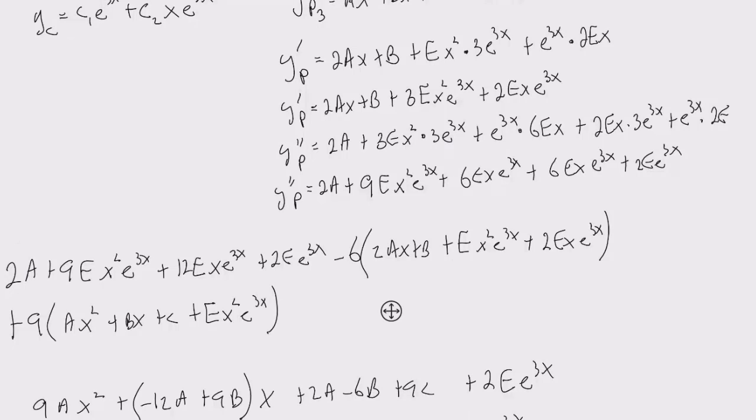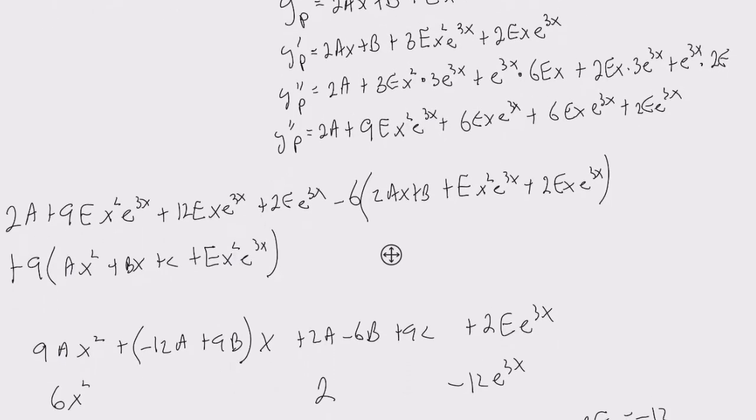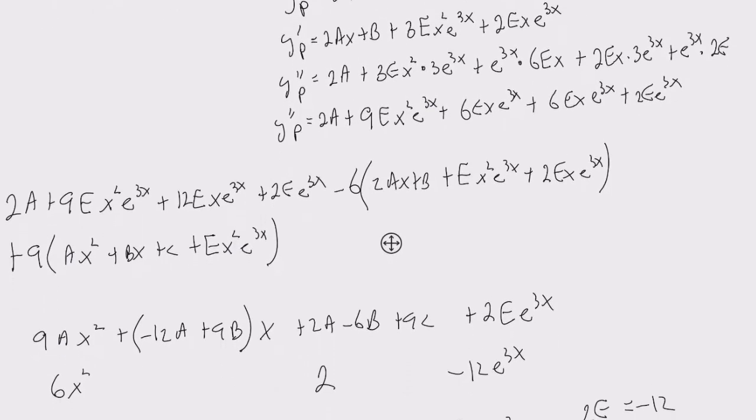And so from here, I labeled it underneath the equivalent right side equation. So six x squared plus two minus twelve e to the three x, which then allowed me to line up all my coefficients.